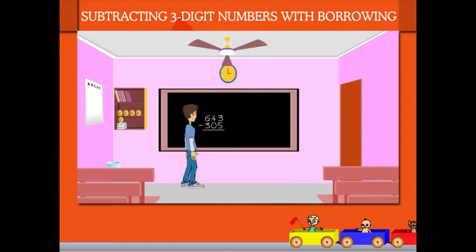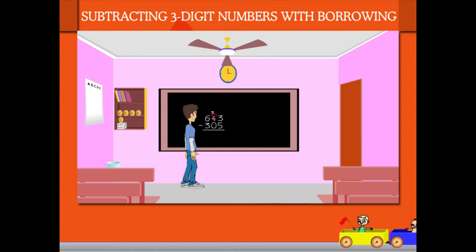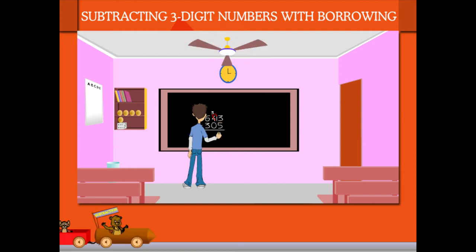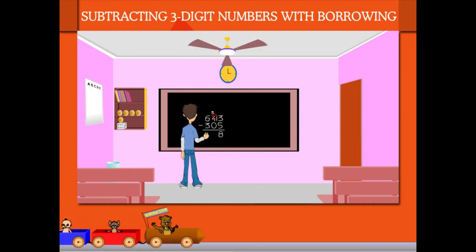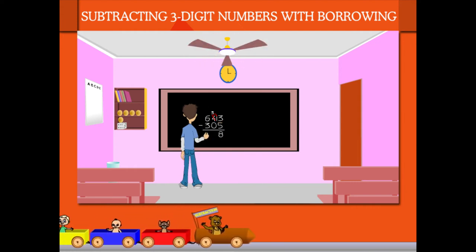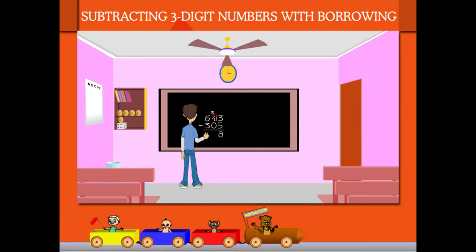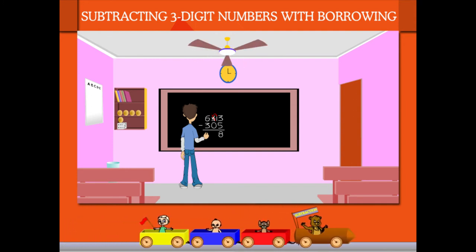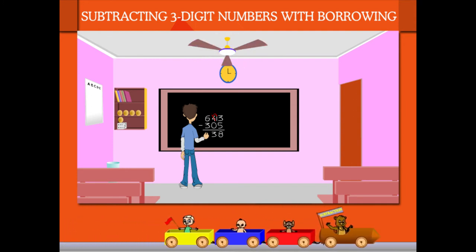From the tens side, Sammy borrows a 10 to the ones. He subtracts 5 from 13 to get 8. In the tens, he has 3 tens minus 0, which is 3.